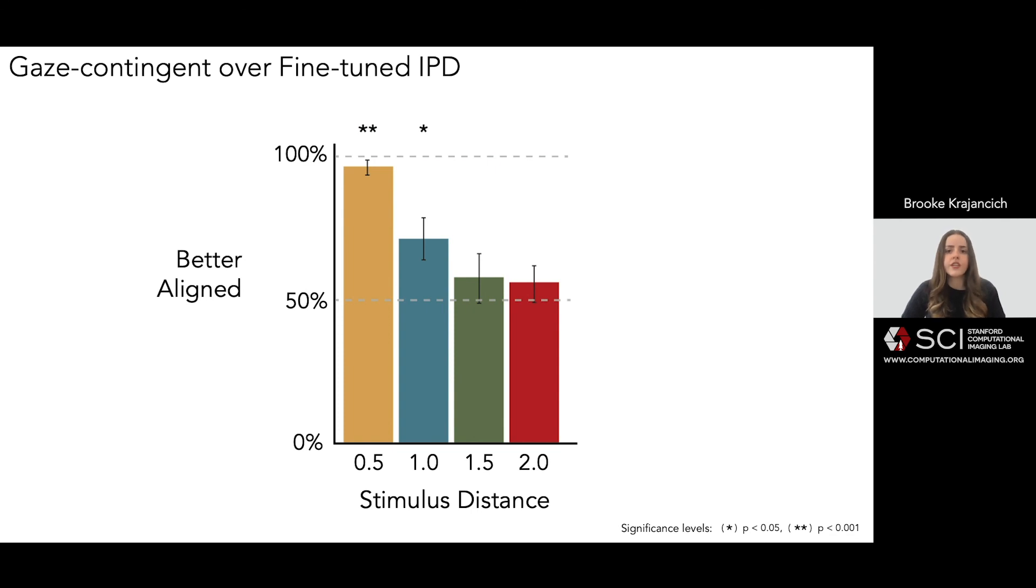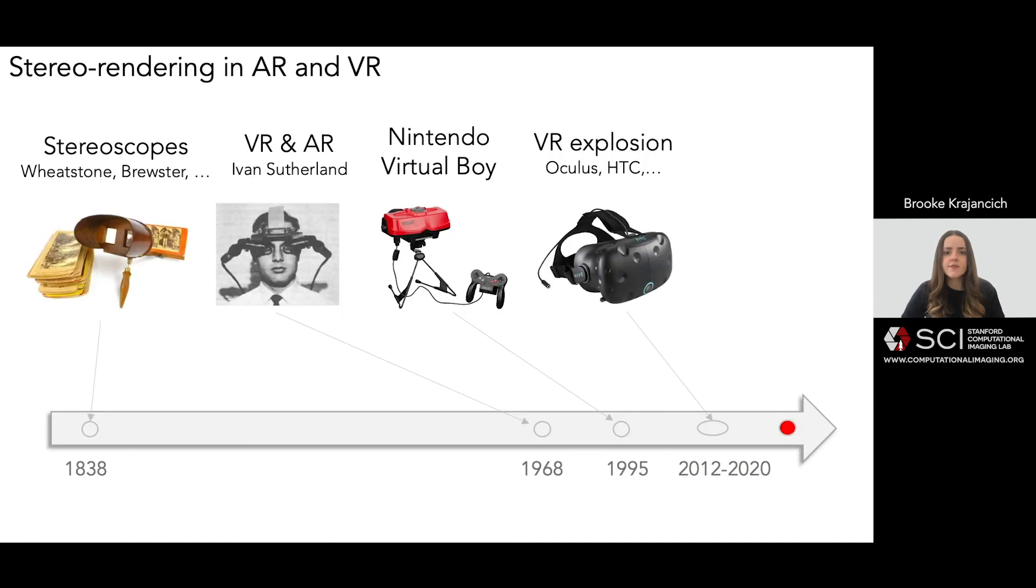But overall, what we've shown here is somewhat surprising. We've known how to do stereo rendering for ages, and we've been doing it in the context of AR and VR for a while now, to the point where it was largely thought of as a solved problem. But with the emergence of wearable eye tracking in commercial AR and VR systems, we are entering a new era of development.